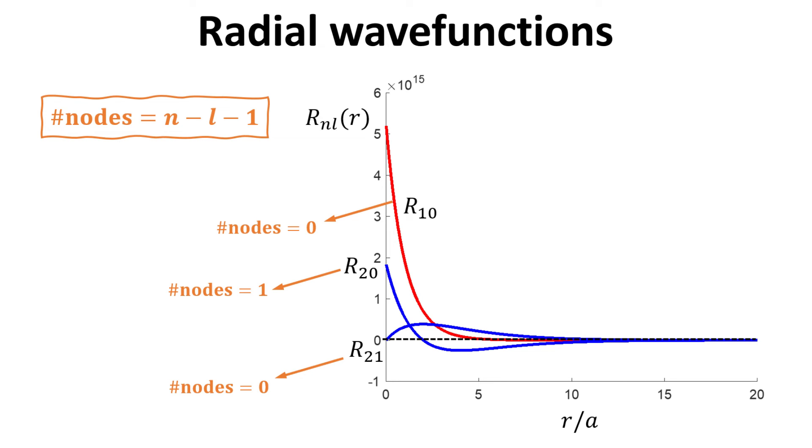For the radial function R20, it also has the maximum at r equals 0. It decreases with r, then goes negative, and slowly converges asymptotically to 0. Hence, it intercepts the x-axis once. We call the number of nodes as the number of times it crosses the x-axis, which in this case is 1.